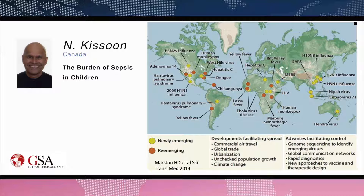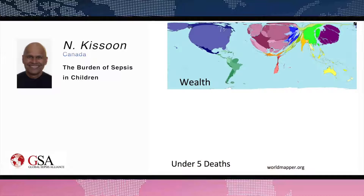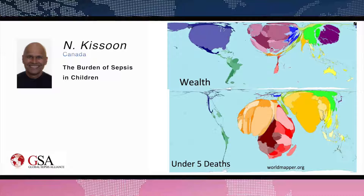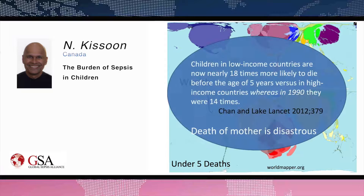Looking at worldmapper.org data where the landmass represents certain variables, one can see that wealth is concentrated in North America, Europe, and Japan, whereas Africa and Sub-Saharan Africa have a smaller amount of resources. At the same time, the majority of under-five deaths worldwide are concentrated in Sub-Saharan Africa and in Asia. There is a reciprocal distribution between wealth and deaths — things are getting worse for children, with children in low-income countries now nearly 18 times more likely to die before age five compared to high-income countries, whereas in 1990 it was 14 times.